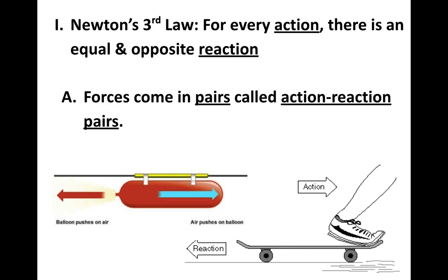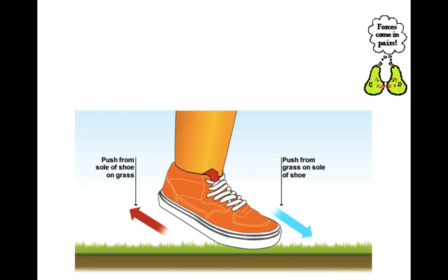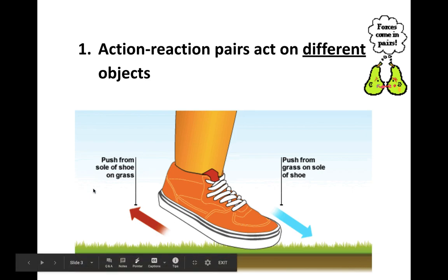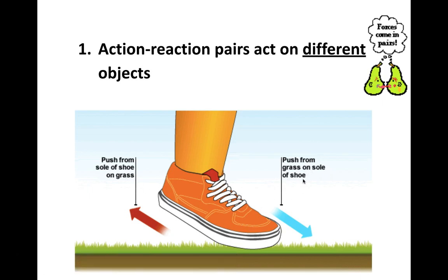We're going to try to understand these action-reaction pairs a little better. The big thing that people don't get correct is that they think action-reaction pairs can be acting on the same thing, where they actually have to be acting on different objects. For this situation where you're walking: the shoe pushes on the ground backwards, and the ground pushes on the shoe forwards. The action is the push from the sole of the shoe on the grass; the reaction is the push from the grass on the shoe. Those two forces act on different objects — one on the grass, one on the shoe.